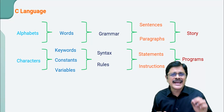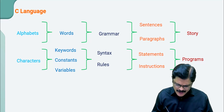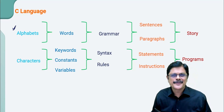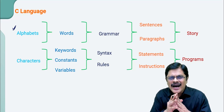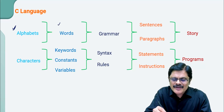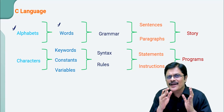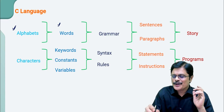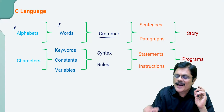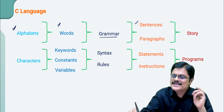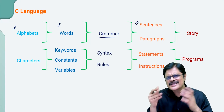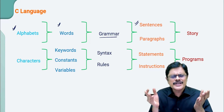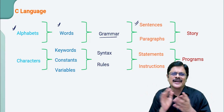How do you learn English language? We start with alphabets. Then alphabets are combined to form words. Then these words can be combined using grammar rules to form sentences. Then the sentences can be combined to form paragraphs.